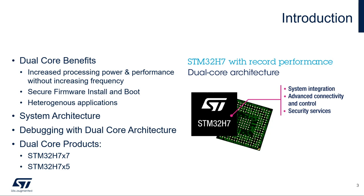To develop a project with dual cores, you'll need to know how to debug them. Debugging with two cores isn't twice as difficult as debugging with one core. However, there are a few tips and tricks. Specifically, the products in the STM32H7 family that have two cores are the STM32H7X7 and the STM32H7X5, and these are the microcontrollers we'll be focusing on.